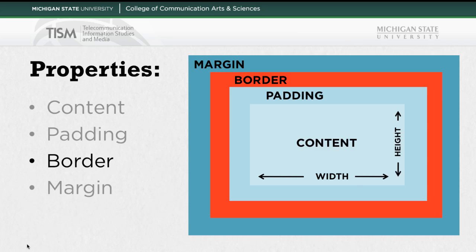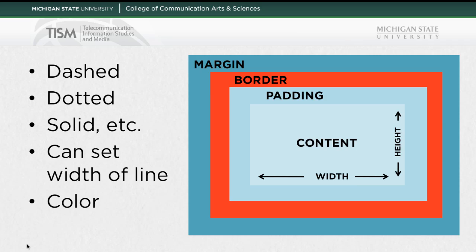Next up we have border, which is on the exterior of the padding and content. The border can come in all sorts of styles like dashes, dots, or solid lines. You can set the width of the line and you can set the color. You don't actually see the padding or the margin, by the way.